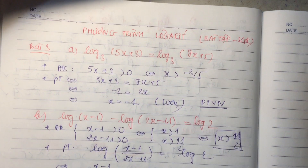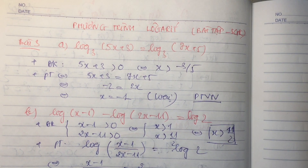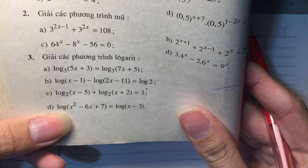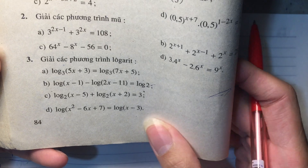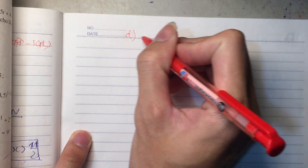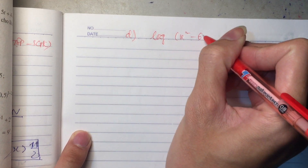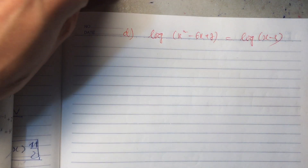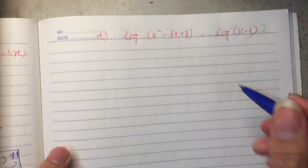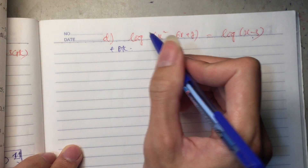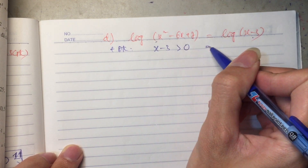Tiếp tục đến với câu D là kết thúc bài tập số 3. Câu D như sau: log cơ số 10 của (x bình phương trừ 6x cộng 7) bằng log cơ số 10 của (x trừ 3). Bài này chúng ta thấy rằng đều cơ số 10, 2 bên là một bên F và một bên G. Chúng ta đặt điều kiện bên này: x trừ 3 lớn hơn 0, tức x lớn hơn 3.